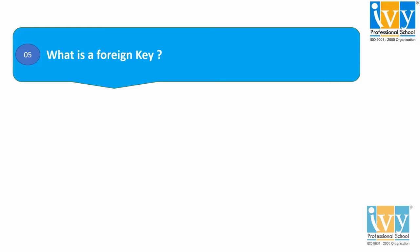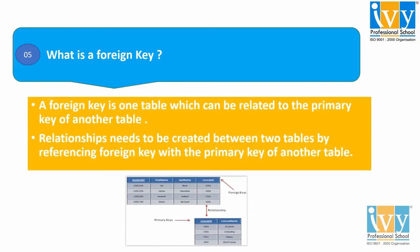Moving to our last and fifth question: what is a foreign key? This is another important thing in SQL that is related to the primary key. A foreign key is a field in one table that can be related to the primary key in another table. The table with the foreign key is often called the child table and the table with the primary key is often called the reference table. That means foreign key and primary key are both related to each other, and a relationship needs to be created between these two tables by referencing the foreign key with the primary key of another table.